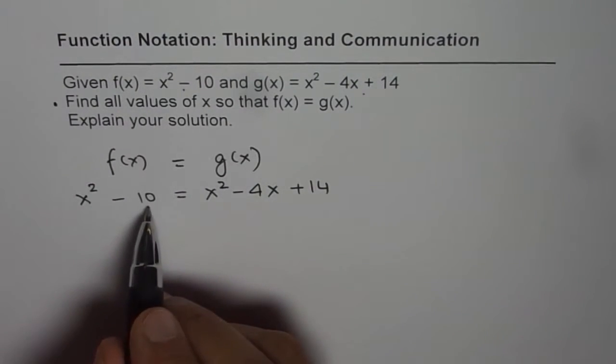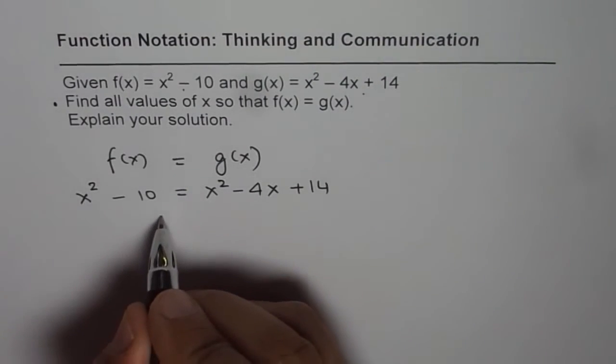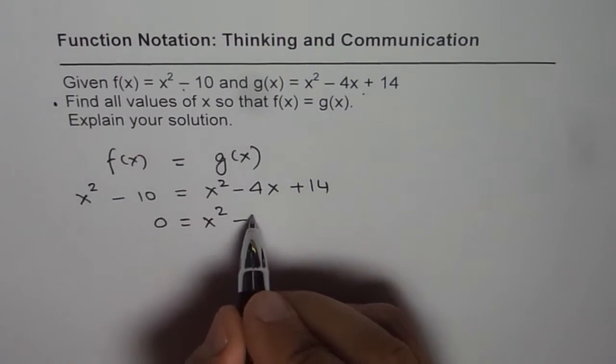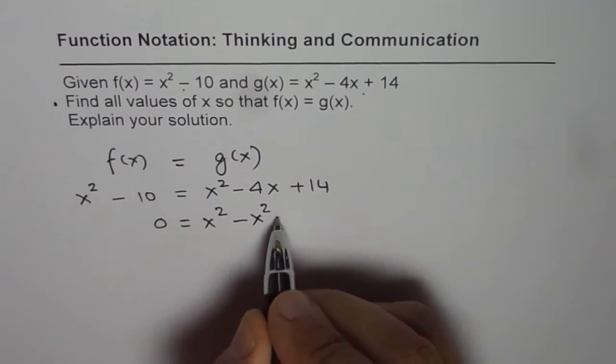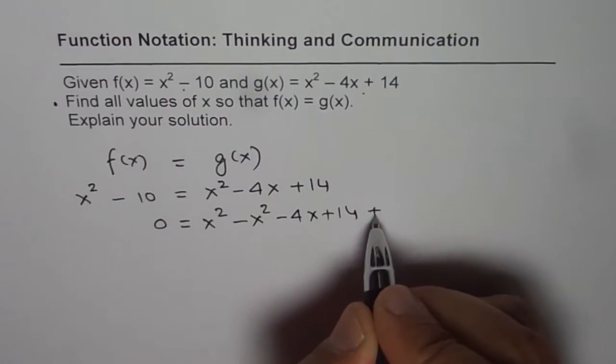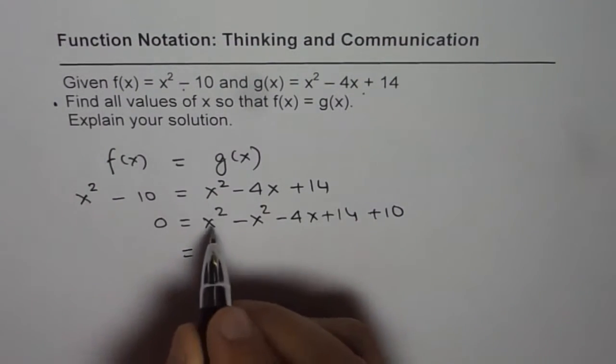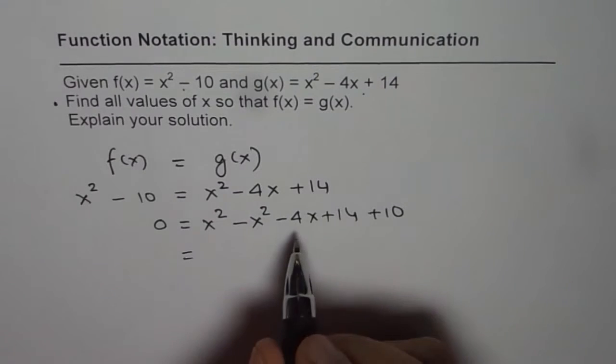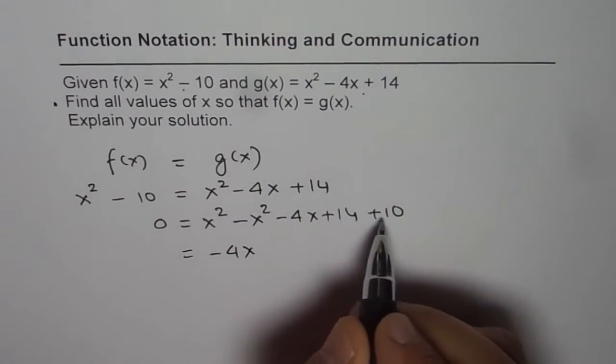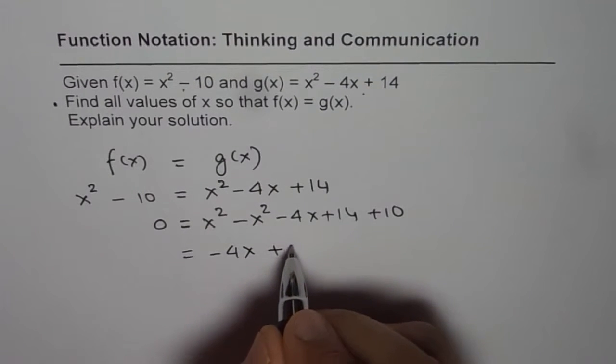Taking all these terms to the right side, we get 0 equals x square minus x square minus 4x plus 14 plus 10. So x square minus x square is 0. We are left with minus 4x and 14 plus 10 is plus 24.